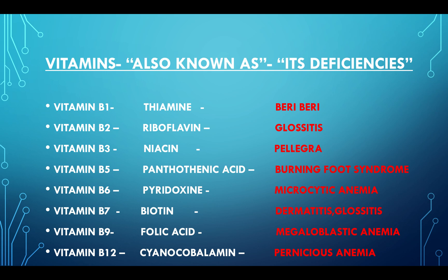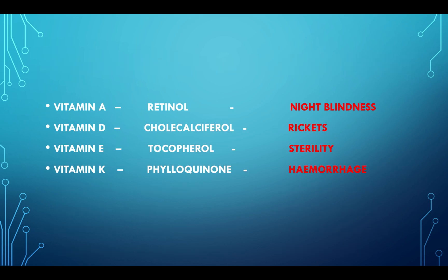Vitamin B12 (Cyanocobalamin) — deficiency produces Pernicious Anemia. Vitamin A (Retinol) — deficiency produces Night Blindness. Vitamin D (Cholecalciferol) — deficiency produces Rickets. Vitamin E (Tocopherol) — deficiency produces Sterility. Vitamin K (Phylloquinone) — deficiency produces Hemorrhage.